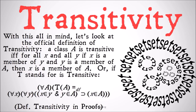With all this in mind, let's look at the official definition of transitivity. A class A is transitive if and only if for all X and all Y: if X is a member of Y and Y is a member of A, then X is a member of A. Or, letting T stand for transitive: T(A) is identical to: for all X and all Y, X ∈ Y and Y ∈ A implies X ∈ A. In other words, all the members of your members must be members of you — if that's true, then you're transitive.